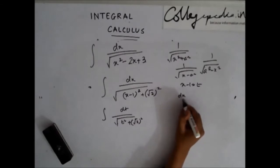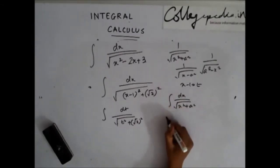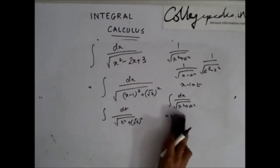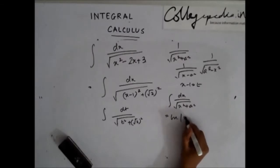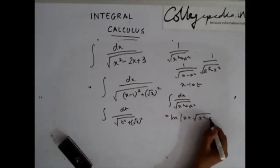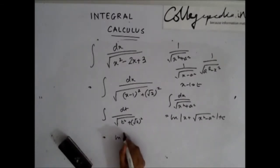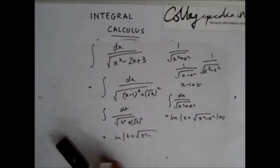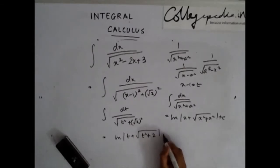Now, you know that integration of dx by x square plus a square is given by ln of x plus root of x square plus a square plus c. Let's recall, is it x square plus a square or x square minus a square? I think it's plus a square. So it becomes t square plus 2 plus c.